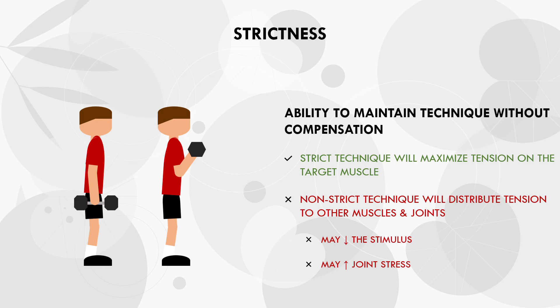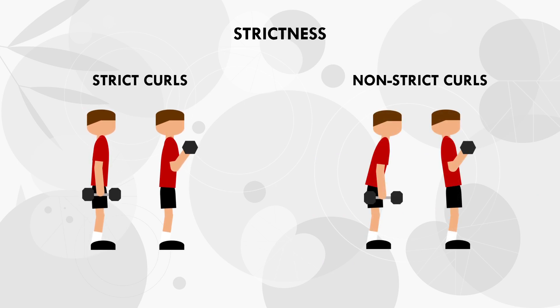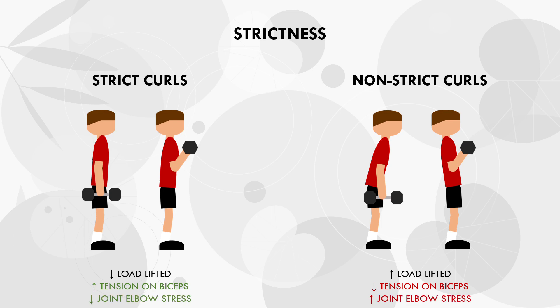A classic example of this is during bicep curls. As we know, we want elbow flexion and maybe some slight shoulder flexion during curls. However, it is always tempting to swing the load towards the end of the set using hip and back movement. This definitely allows us to lift heavier weights, but it doesn't provide any additional stimulus to the biceps - if anything, it may take tension off the biceps at the bottom position. So in this case, the trainee is inhibiting the stimulus and increasing elbow joint stress. Therefore, trainees should always try to lift with strict technique even if it means reducing the load slightly.